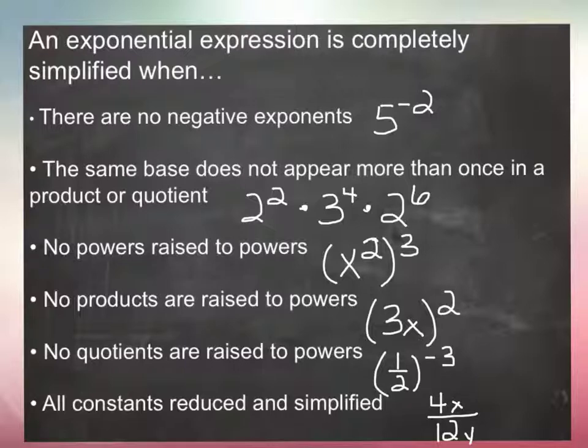The last part a lot of students make mistakes on. All constants are reduced and simplified, so if I had 4 and 12 here, I can reduce and simplify 4 and 12, but I can't reduce the variables. So I would just have to do the coefficients 4 and 12 first and then I would be done.